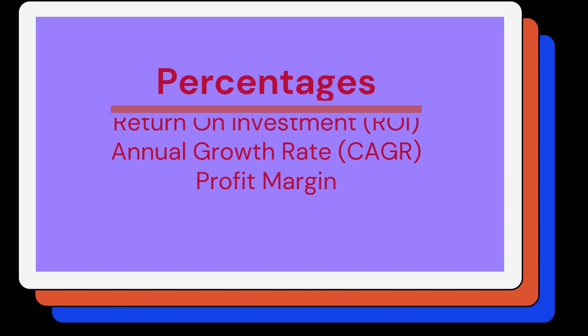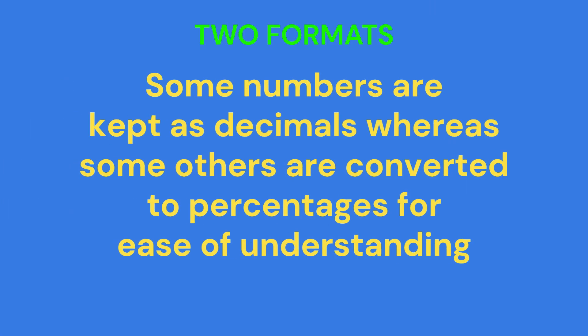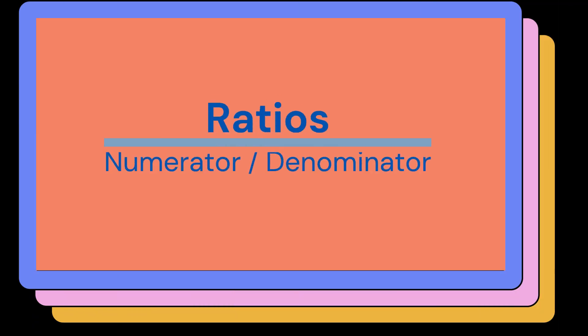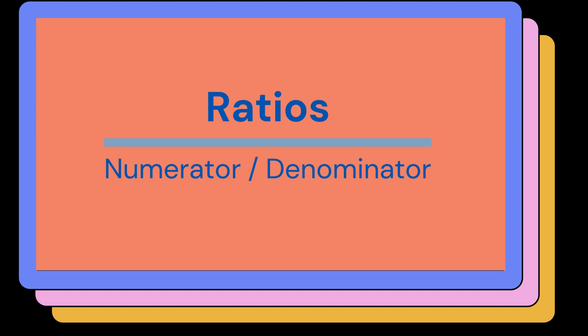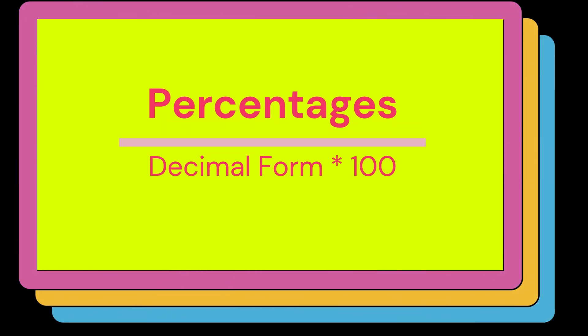Examples of percentages include return on investment, annual growth rate, profit margin, etc. Some numbers are kept as decimals whereas others are converted to percentages for ease of understanding. Ratios are calculated by dividing the numerator by the denominator, and percentages are found by multiplying the decimal form with 100.